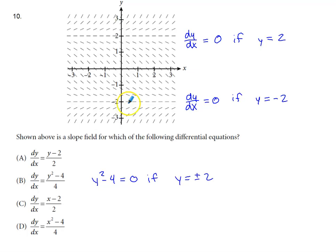We have a similar situation down here at the y value of negative 2. We see horizontal line segments for the entire slope field across that y value. So the derivative has to have a value of 0 if y equals negative 2.